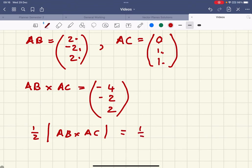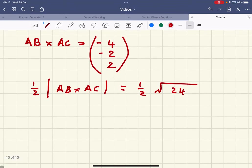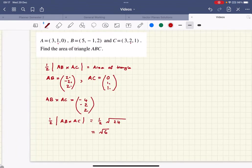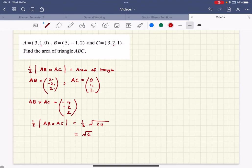So we're going to have a half of square root of 16 plus 4 plus 4, which is 24. 24 is 4 times 6. The 4 comes out to give me 2. So that will give me square root of 6. So the area of that triangle is square root of 6 using vector methods.